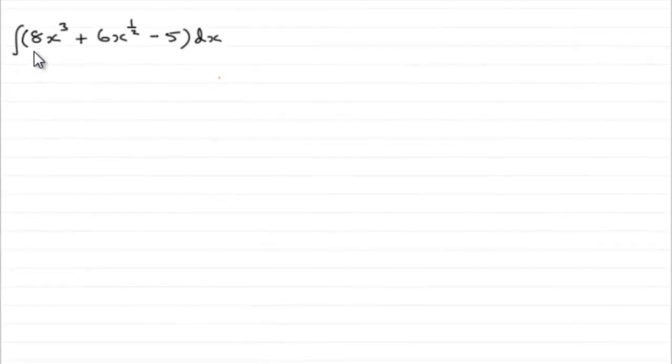Now for this question, we've got to integrate 8x cubed plus 6x to the power half minus 5 with respect to x. And this is fairly straightforward because all we've got to do for terms like this is just add 1 to the power and divide by the new power.